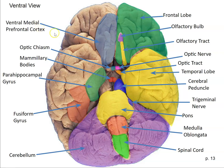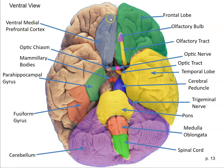Here you have the ventral medial prefrontal cortex, or vmPFC. The olfactory bulb and olfactory tract are highlighted nearby but are not actually part of it. We'll learn about the vmPFC later in the context of emotions — this part of the brain is important for reactivating older emotional memories.